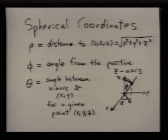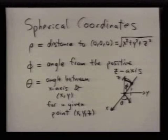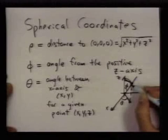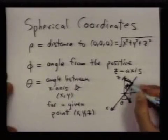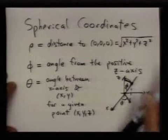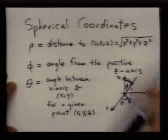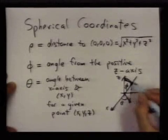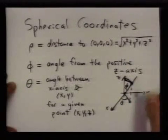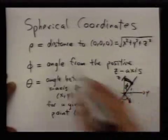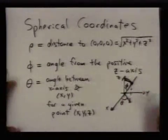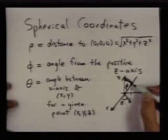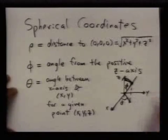You should think of it this way: phi tells you the angle of an arm that you can move up and down, theta tells you how much you can turn, and rho tells you how far out you can reach. Together, you can grab any point in three dimensions.